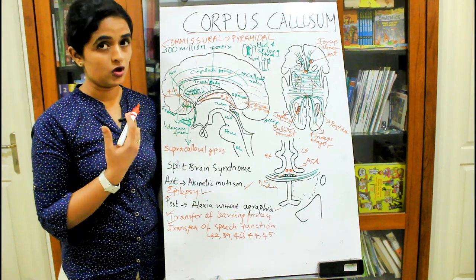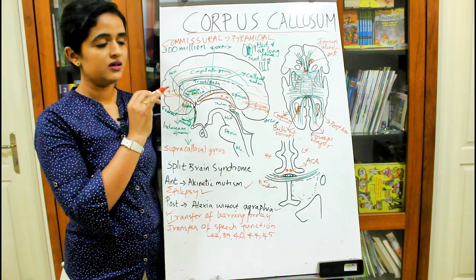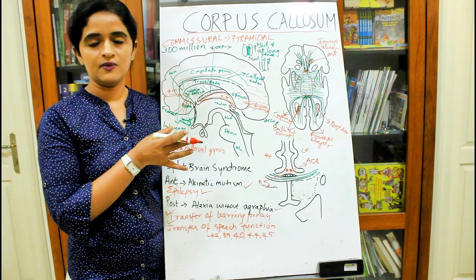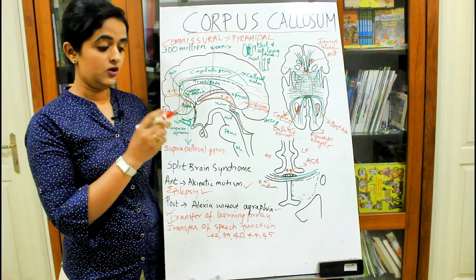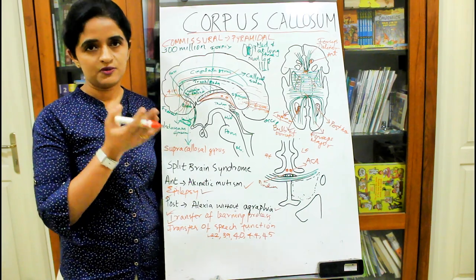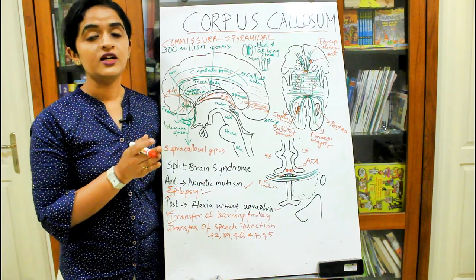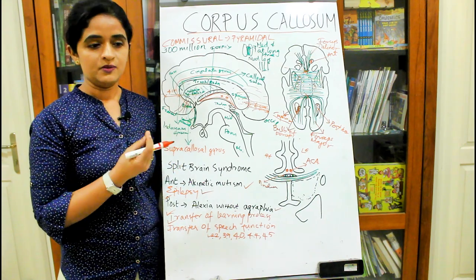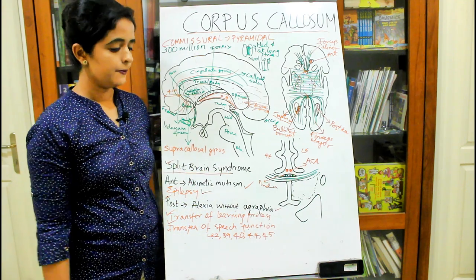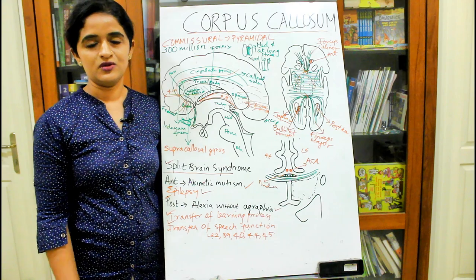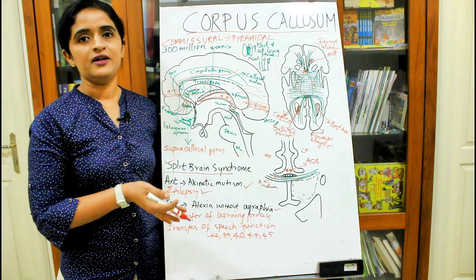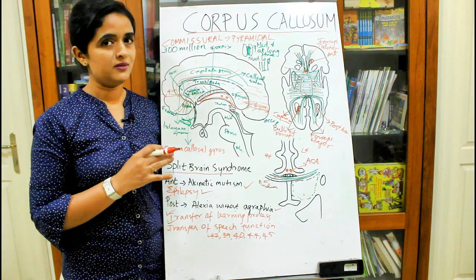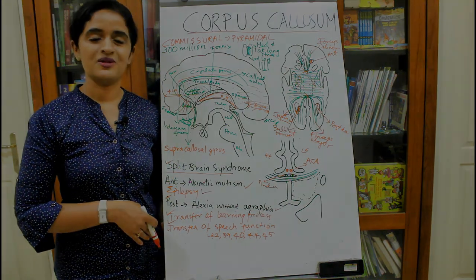To summarize: we covered the different parts of the corpus callosum, the fibers radiating from it, the boundaries it forms — especially for the lateral ventricle — and the two main functions: transfer of learning process and transfer of speech areas. When you divide the corpus callosum, it results in split brain syndrome. In the next session, I will be dealing with the projection fibers, most importantly the internal capsule. Thank you for watching.